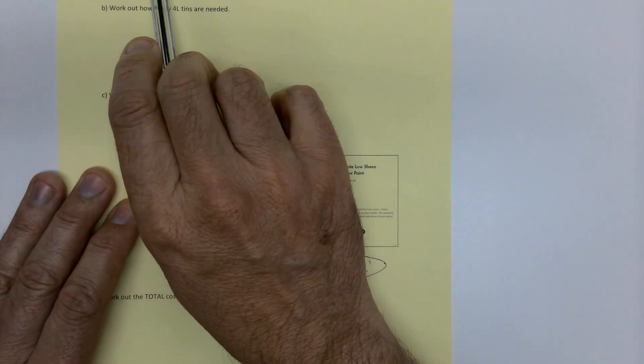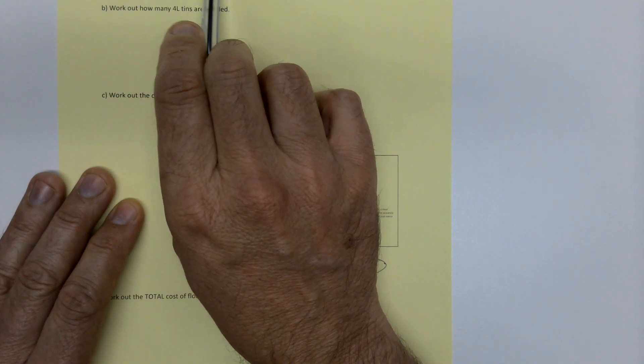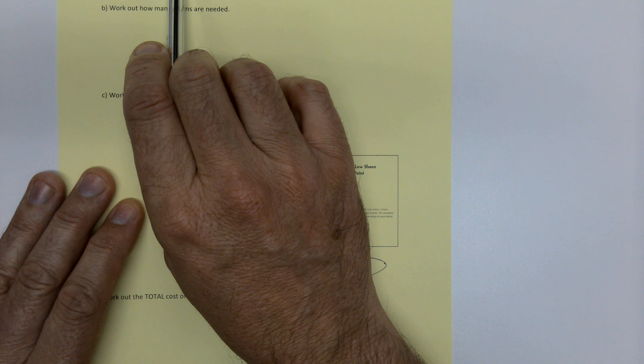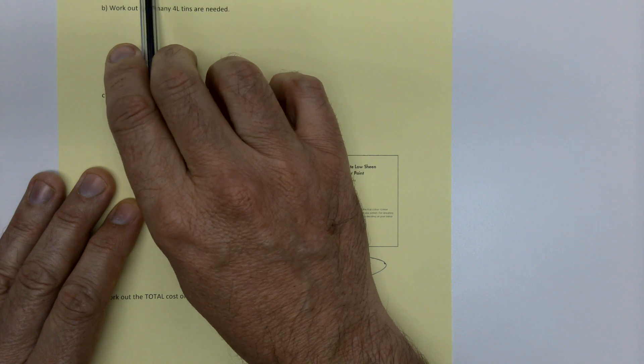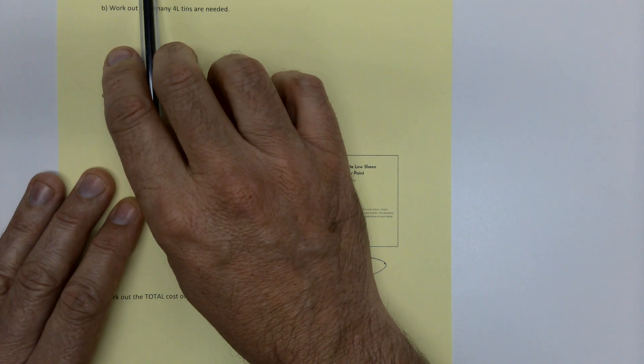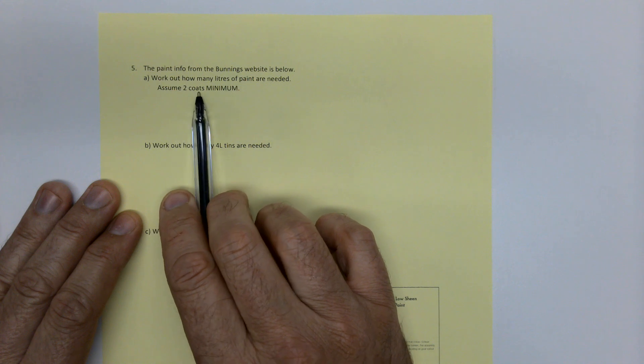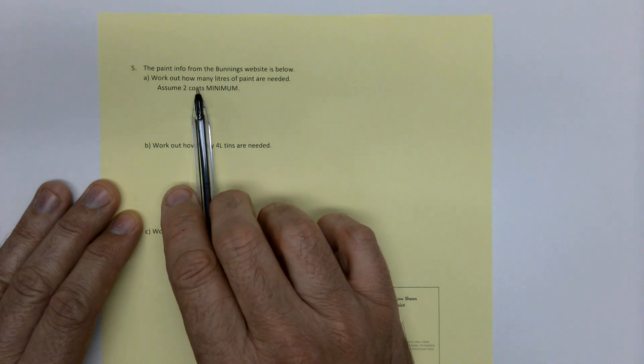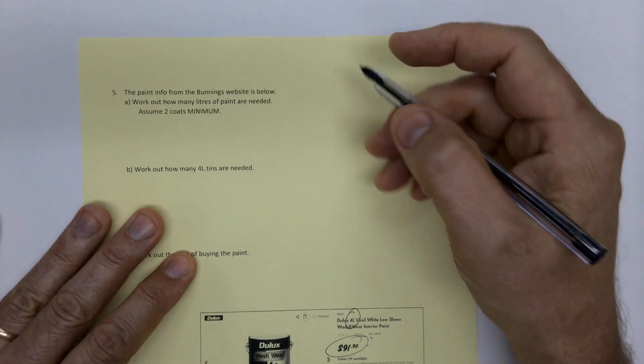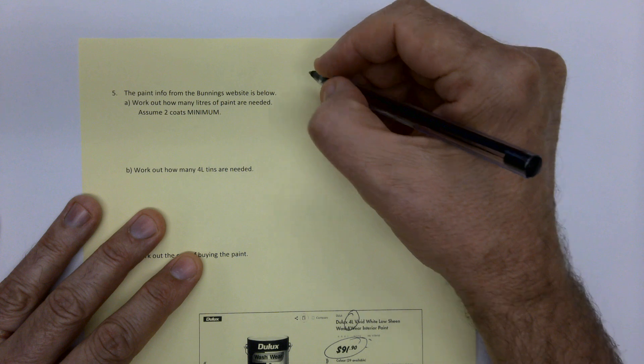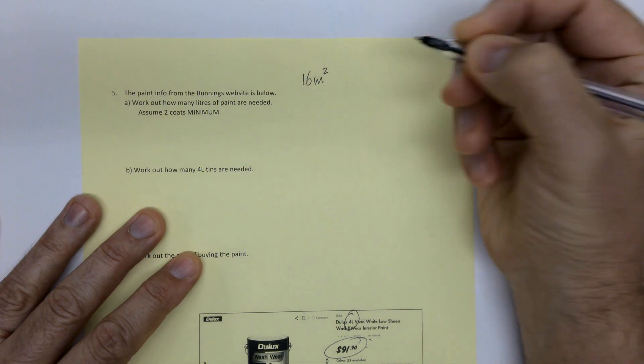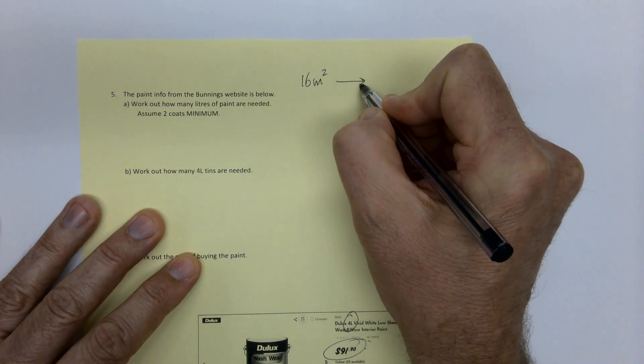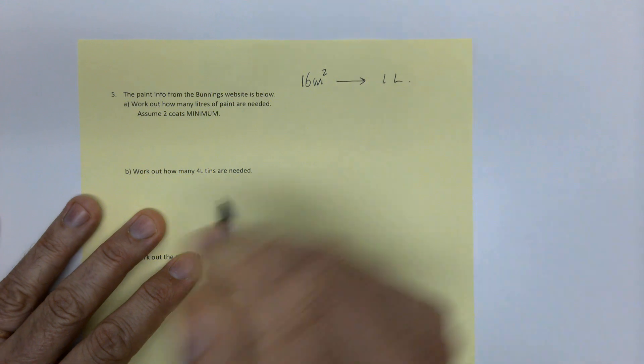So what's it asking you there? Work out how many liters of paint are needed. Assume two coats as a minimum. So again, that's an assumption. You could assume that you're going to do three coats and yours. That's fine. But no one ever does one coat if you're doing a proper job. So let's assume two coats. So here we go. So 16 square meters is covered by one liter of paint.